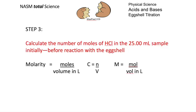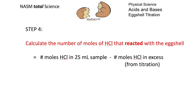And once you've got that, calculate the number of moles of HCl you had in your initial 25 mL sample before the reaction with the eggshell. And so to find the number of moles of HCl that reacted, you've got this initial number of moles of HCl in your 25 mL sample plus the number of moles that were in excess after the eggshell reaction with the reaction with the eggshell that you got from the titration that you've just done.